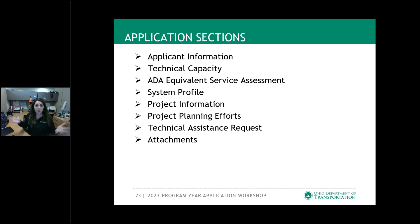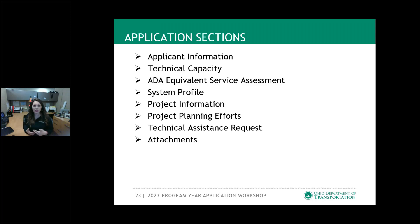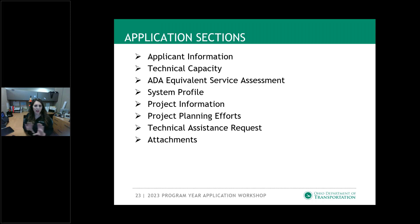First and foremost is applicant information. This is a section that everyone's going to complete, and it's a really crucial section because it actually determines what you see moving throughout the application. For example, in the applicant information, we ask you where you are operating out of, and if you say you're in urban public transit, you're not going to see the system profile or the technical assistance request sections — those will be hidden so you don't have to interact with them because they don't apply to you. Making sure this section is filled out correctly is really important, because it dictates the rest of the application.